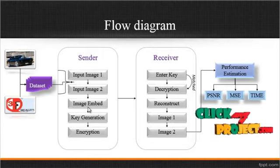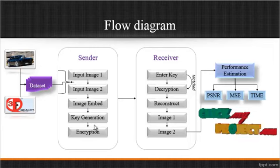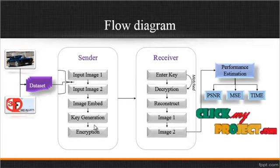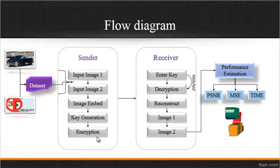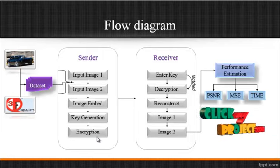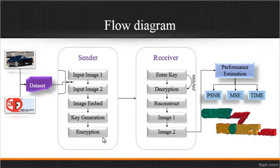After creating the embedded image, the key generation step is carried forward. In this key generation step, we generate one key — essentially a password. Using that key, we encrypt the image using the encryption algorithm. After encryption, the encrypted image is stored in a separate folder. This is the overall process done on the sender side.